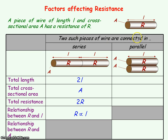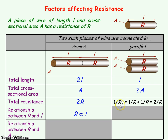We're now going to consider two identical pieces of wire connected in parallel. The length of the wire will be L, but the total cross-sectional area will be 2A. To get the total resistance we use the parallel resistance equation: 1 over R-total equals 1/R plus 1/R, which equals 2/R. Taking the reciprocal, R-total equals R over 2, which is half of R.